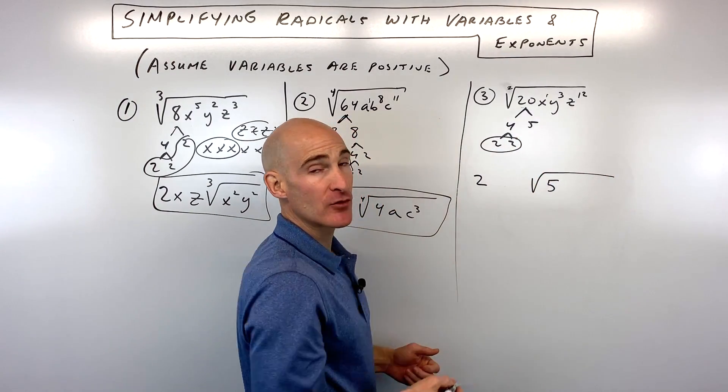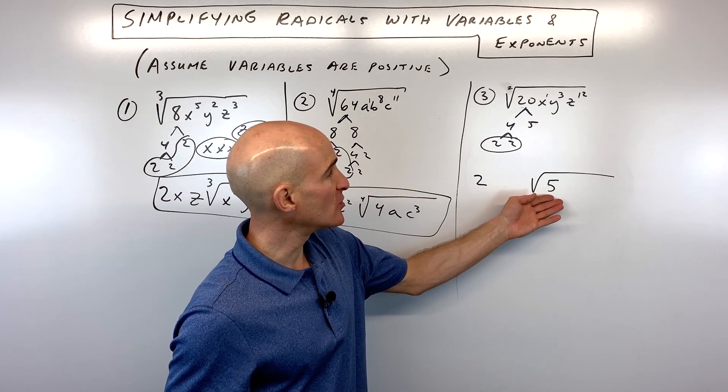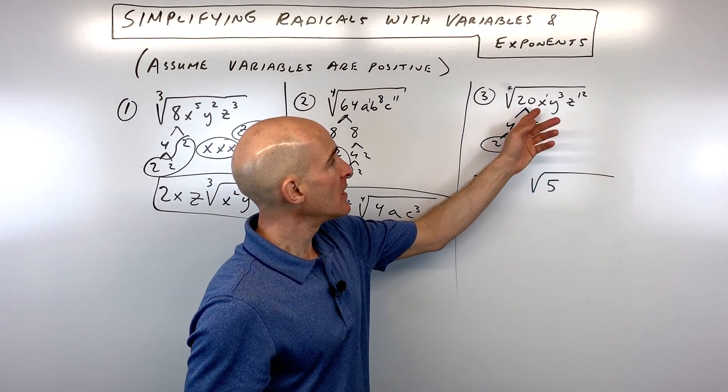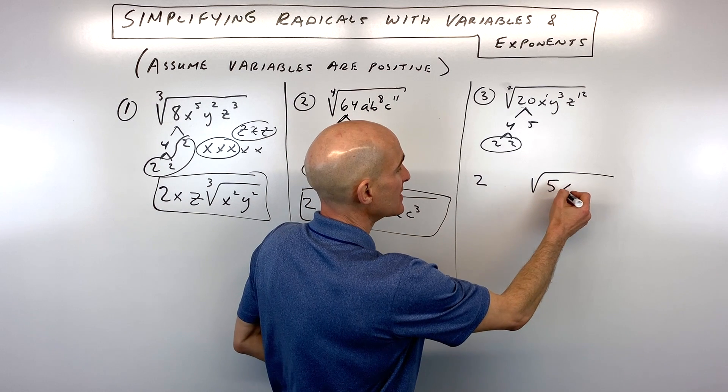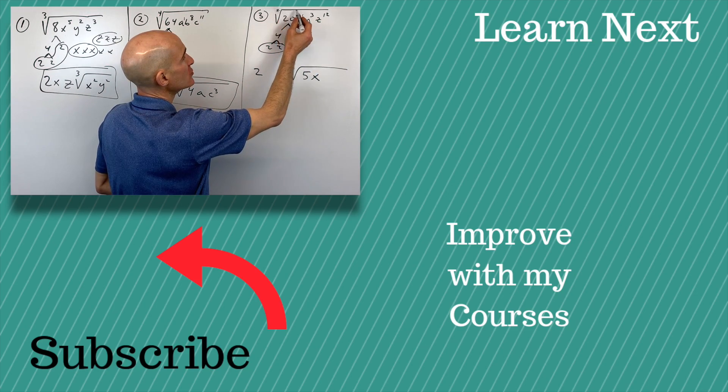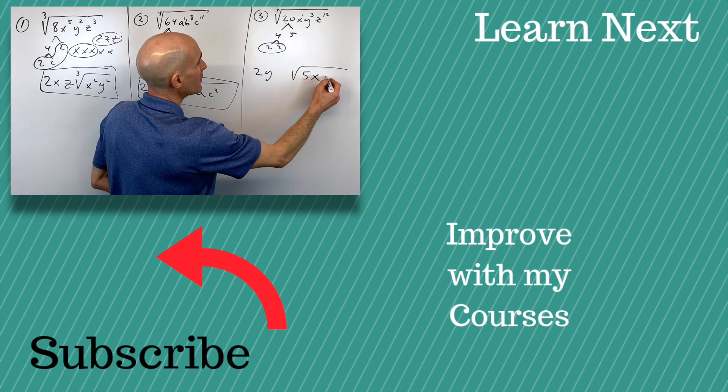Now, if there was a 5 and a 3 left over, we would multiply those together. That would be 15, which would stay underneath the radical. Here we don't have enough to make a group of 2 with the x's. That's going to stay underneath the radical. Here, 2 goes into 3 once with 1 left over.